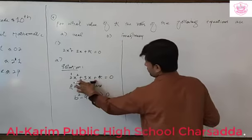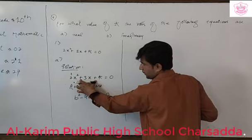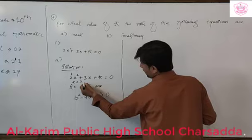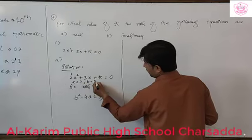Now to find the value of k, we need to compare this equation with the general form of a quadratic. When we compare, we get a equals 2, b equals 3, and c equals k.